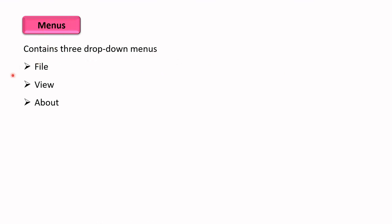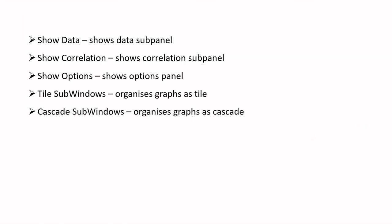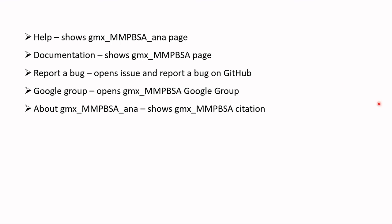In the menu box there are three different drop-down menus: File, View, and About. The View menu includes options to show data, show options, tile windows, and cascade sub-windows. Under Help, you can access documentation showing the MMPBSA homepage. If there are any bugs, you can report them in the 'Report a Bug' tab, which opens an issue on GitHub. There is also a Google group where you can ask queries, and the 'About GMX MMPBSA' section shows the MMPBSA citation.